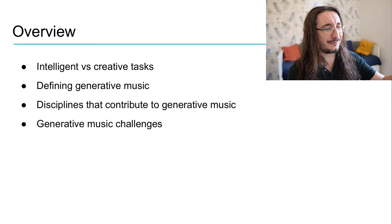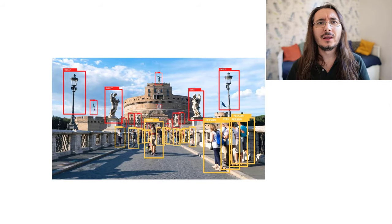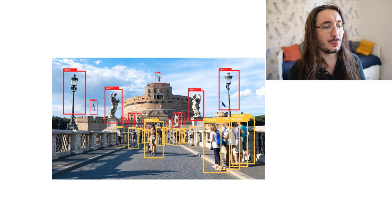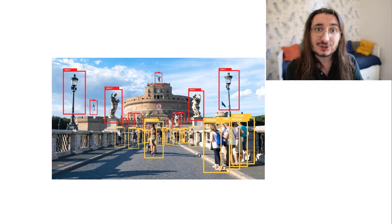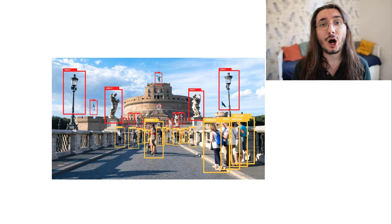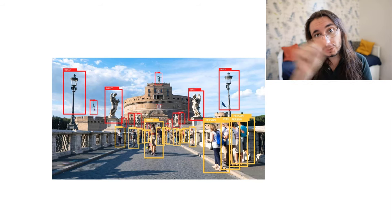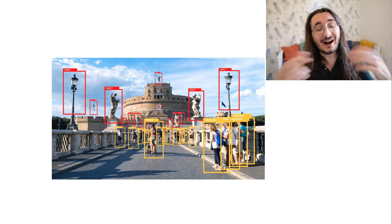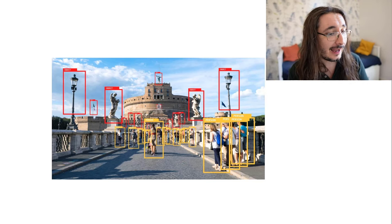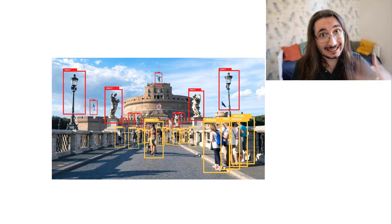Let's start from the difference between intelligent and creative tasks. Those of you familiar with computer vision will probably recognize the intelligent task I'm portraying here with this picture, and that is object detection. The task is quite straightforward: I have a picture and I want to locate and identify all the different objects and name them within the picture. For example, here I have people and statues.